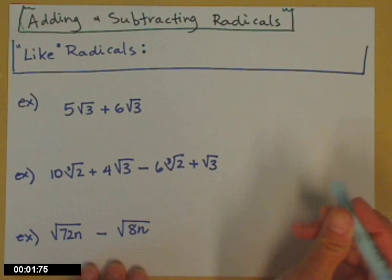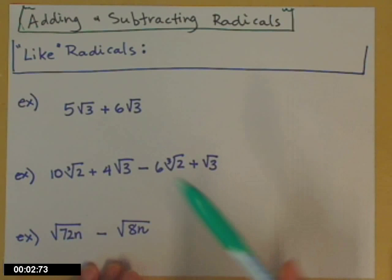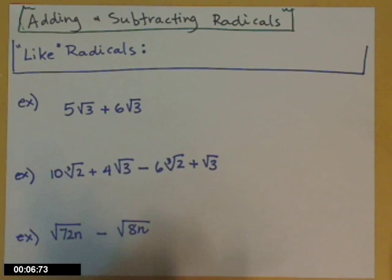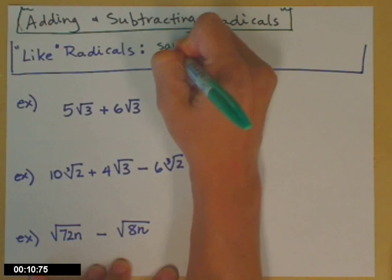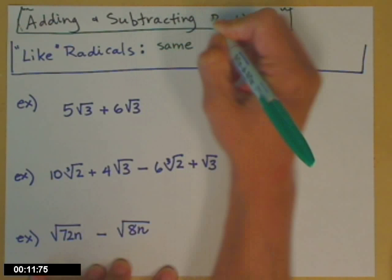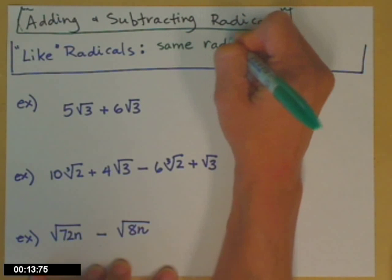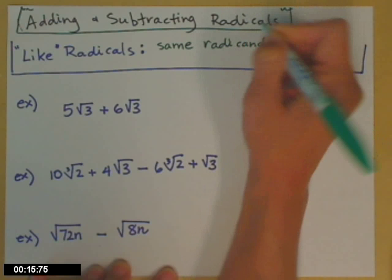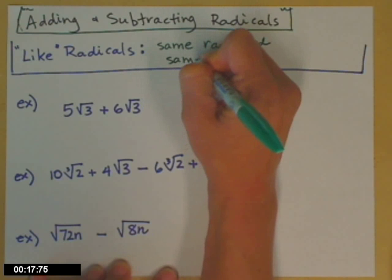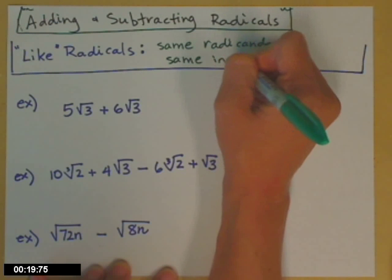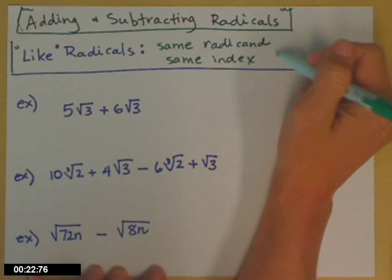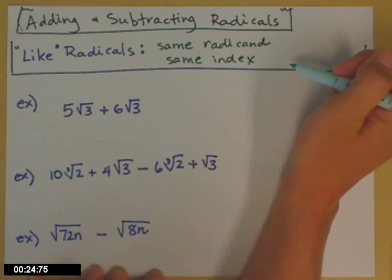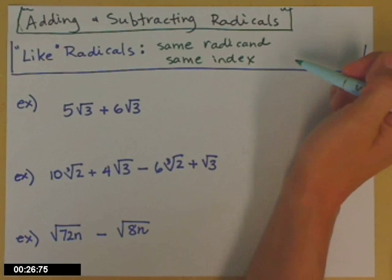We'll now go over adding and subtracting radical expressions. One thing we need to define first: what are like radicals? The answer is same radicand — remember, that's the part underneath — and same index, the little number out front. Only when we have these two things are we able to add and subtract radical expressions.